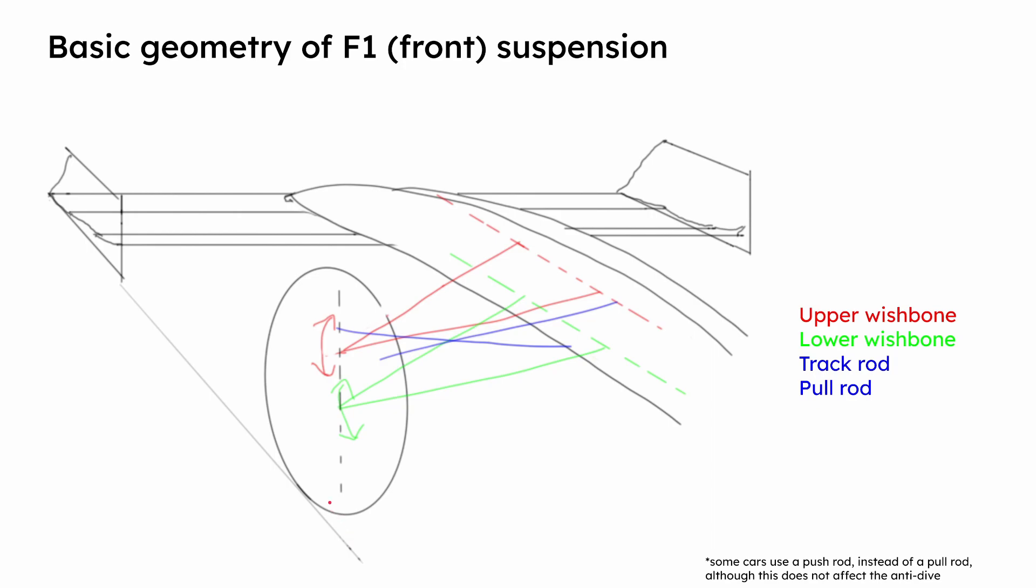This also means that if an additional load is placed on the front axle, the front ride height will reduce. The track rod is only used to steer the car and does not have an impact on the ride height, so it will be ignored for the remainder of this video.